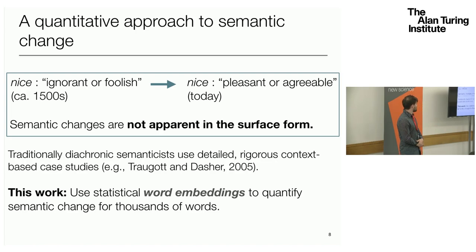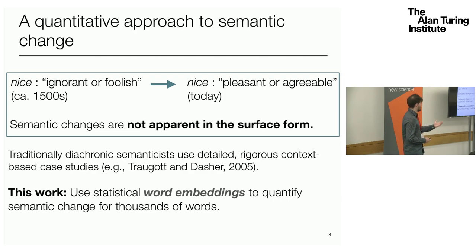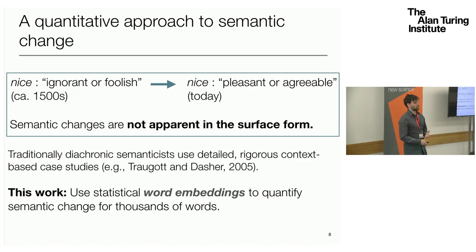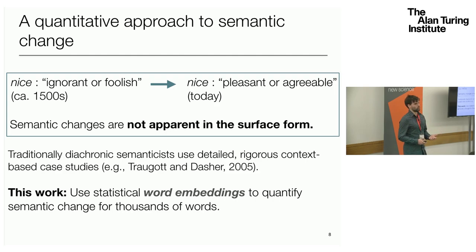Historically, what people have done is infer semantic change by looking at the context that words are being used in and doing really detailed case studies. There's some great work by Traugott and Dasher that uses these case studies to generalize and make statements about the general laws governing the way that word meanings evolve. Unfortunately, these case study-based approaches don't really scale to the sorts of questions I want to answer here, because if I want to make a statement about negative words generally changing at a faster rate than positive words, we really want to look at this for thousands of different words to have enough statistical power.